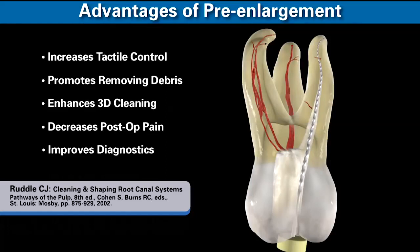If we pre-enlarge a canal, we have a lot more apical one-third control with our hand files. The irrigant in a pre-enlarged canal is present in sufficient volume that it can penetrate, circulate, and begin clinging into the uninstrumented portions of the root canal space. Plenty of research has shown that a pre-enlarged canal decreases postoperative pain because there's less likelihood of pushing debris inadvertently periapically. And when we have a pre-enlarged canal, its apical one-third can usually accept a larger instrument, improving radiographic control and enhancing the accuracy and reliability of all apex locators.